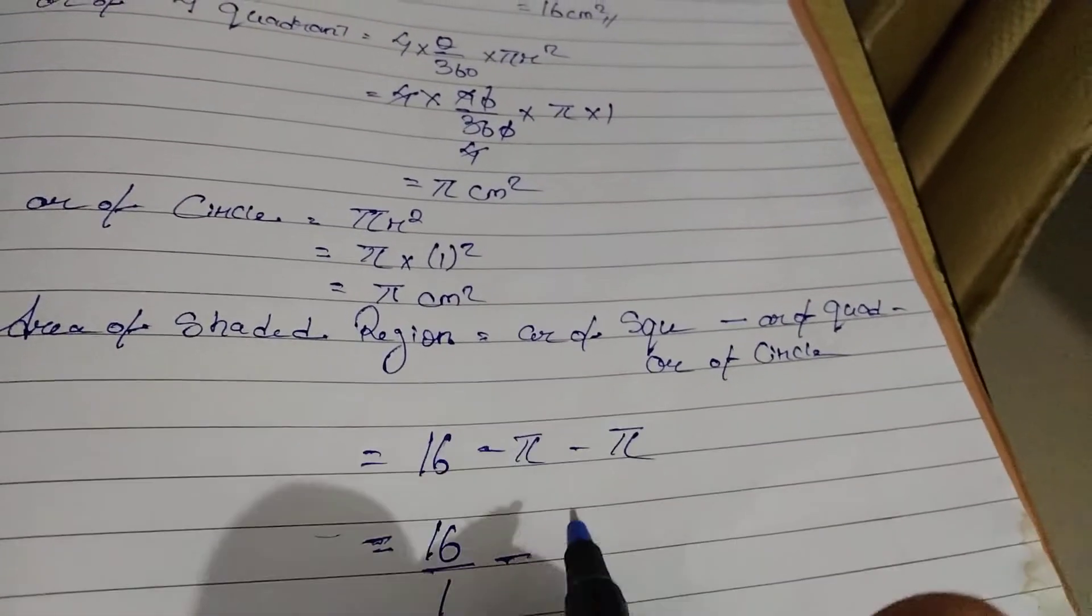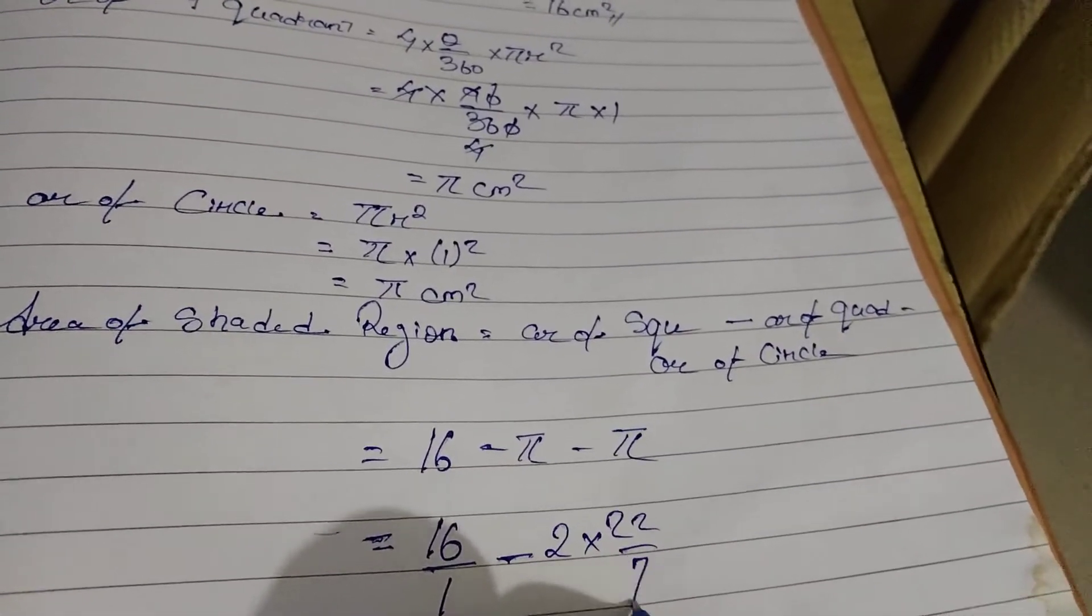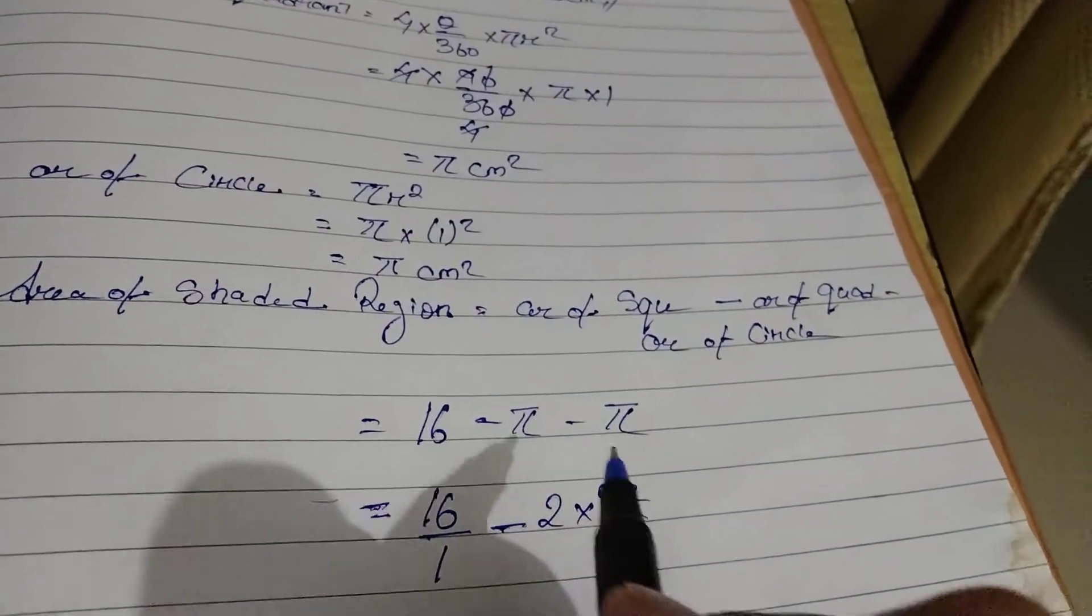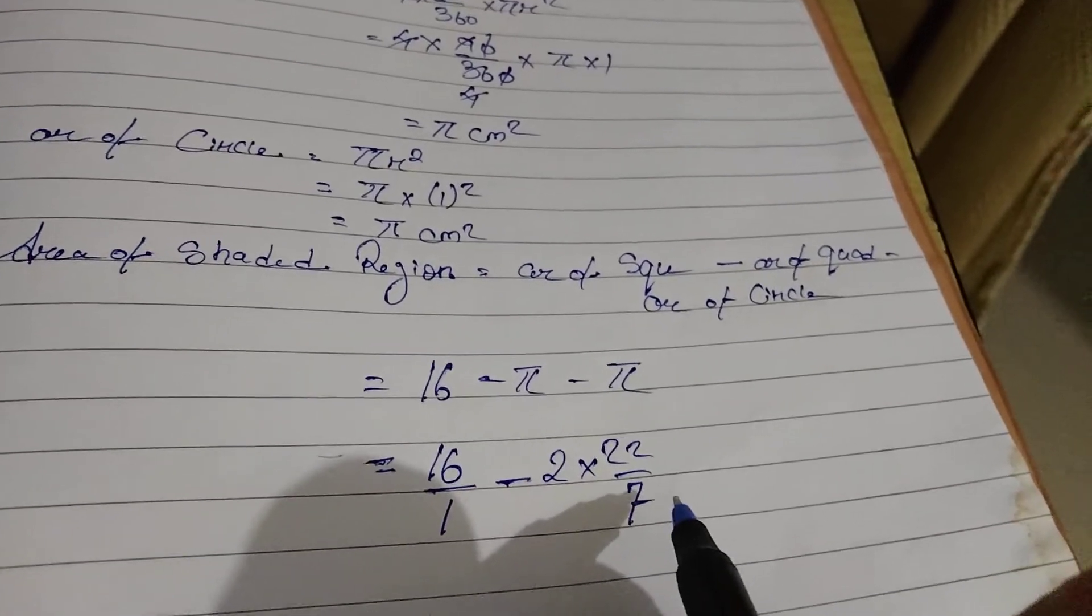Pi is 22 by 7. Instead of writing 22 by 7 two times, I will just write 2 into 22 by 7. I hope it is clear.